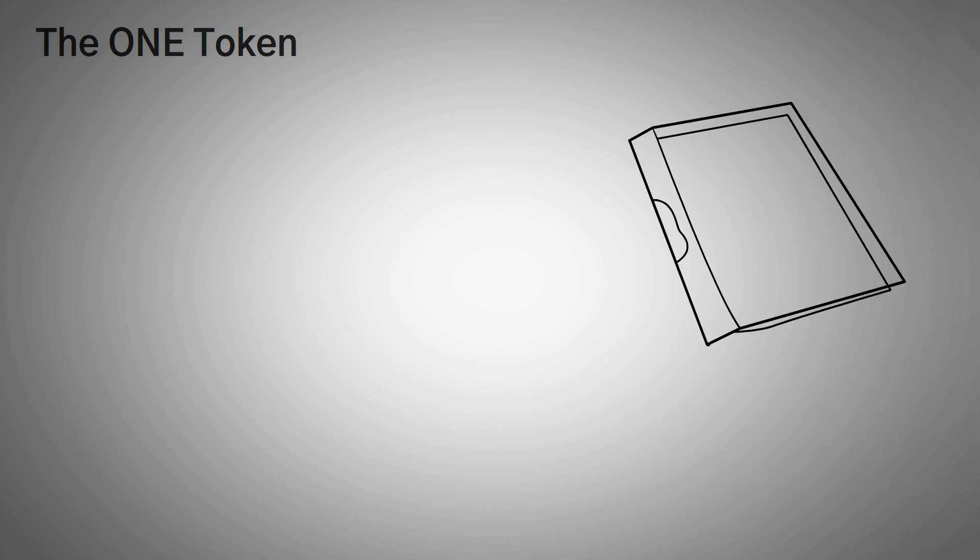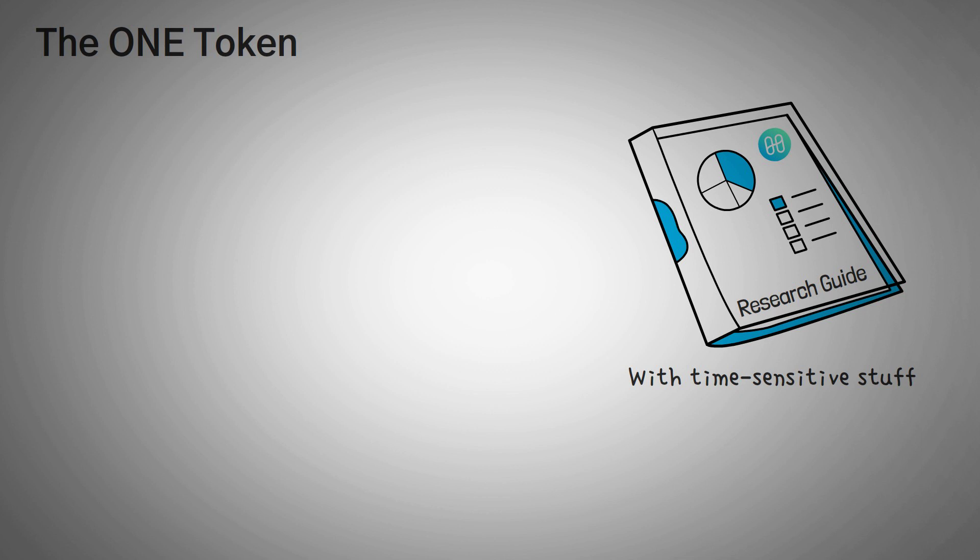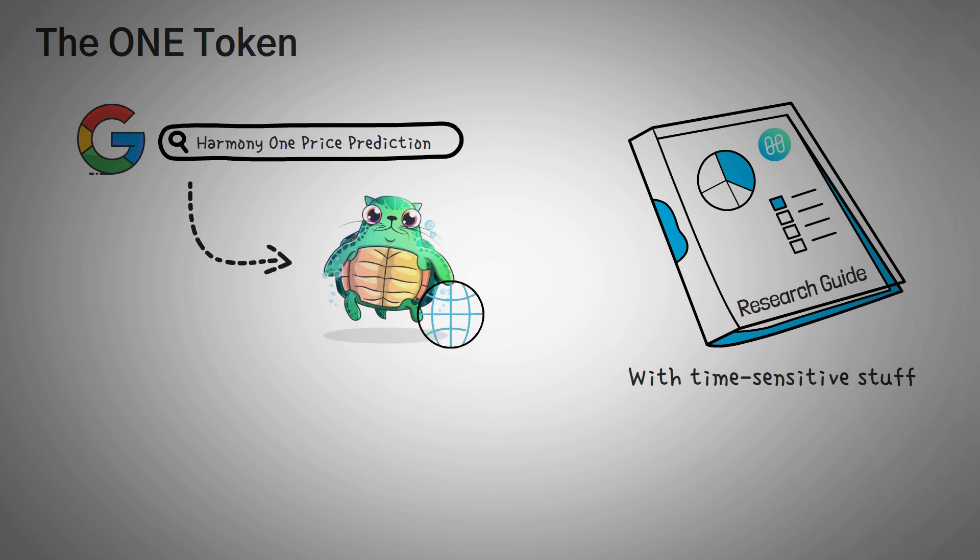Finally, the last part of the Harmony 1 ecosystem is the usage of their token, 1. Before we get too far into the tokenomics of the 1 token, you should note that I've put together a pretty large research guide for Harmony 1. It includes a lot of time-sensitive stuff, and just like I did with the Chainlink video, to get it, you'll have to go to Google and type in Harmony 1 price prediction, and then look for our whiteboardcrypto.com website.